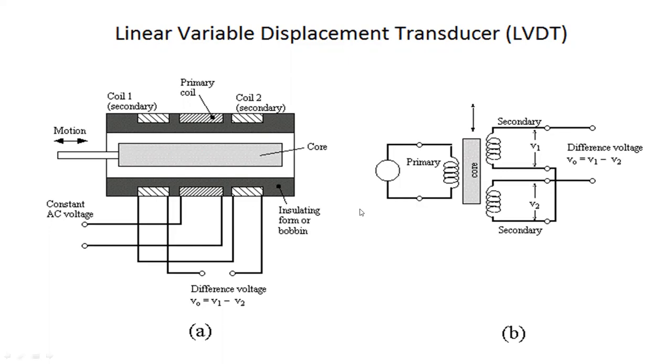It is categorized as an inductive transducer used to measure the speed or position of an object. Generally, most inductive sensors work on the principle of a transformer. Let's discuss this in complete detail.